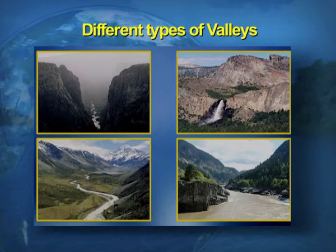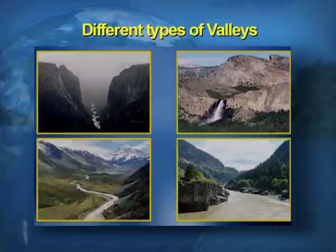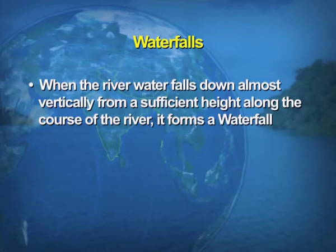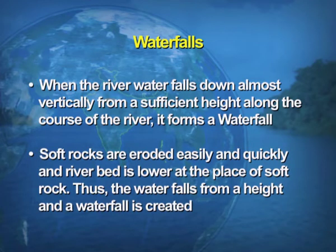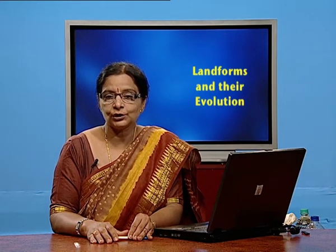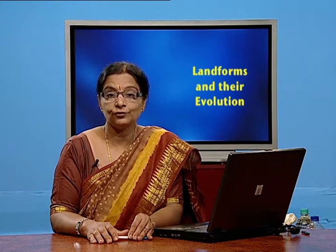You can look at the screen to see the different visuals of the valleys formed by the river. The last erosional feature formed by the river is the waterfall. When the river water falls down almost vertically from a sufficient height along the course of the river, it forms a waterfall. Soft rocks are eroded easily and quickly, and the river bed is lower at the place of soft rock as it gets eroded easily in comparison to the hard-rocked area. Thus the water falls from a great height and a waterfall is created.